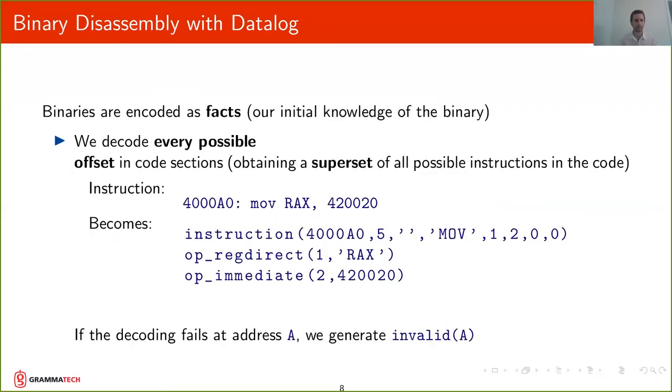So how do we do this? Well, to do binary disassembly with Datalog we have to take the binary and we have to encode the information in the binary into facts—that is, the initial knowledge of the binary. So we are going to decode every possible offset in the code sections